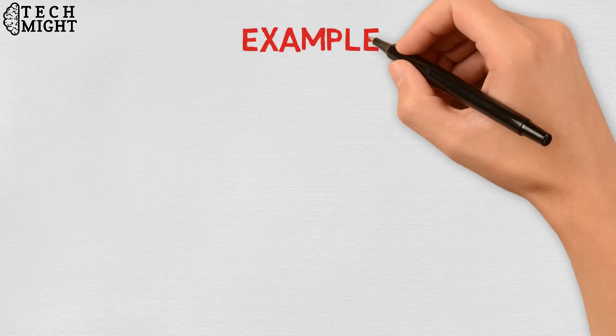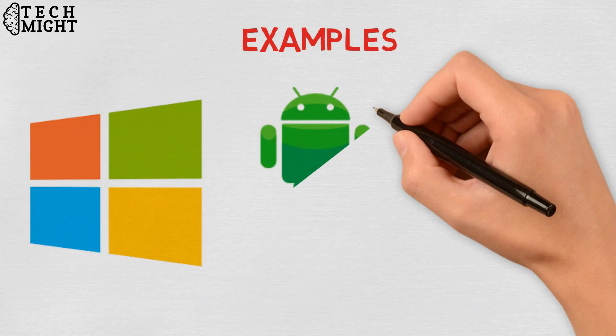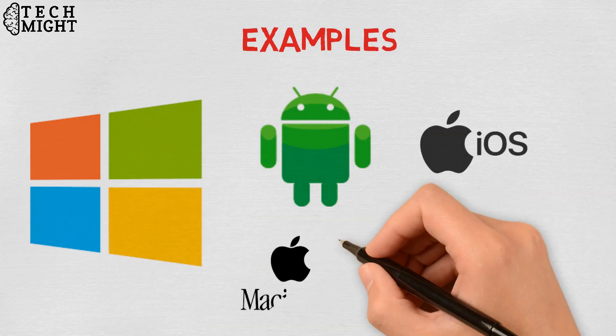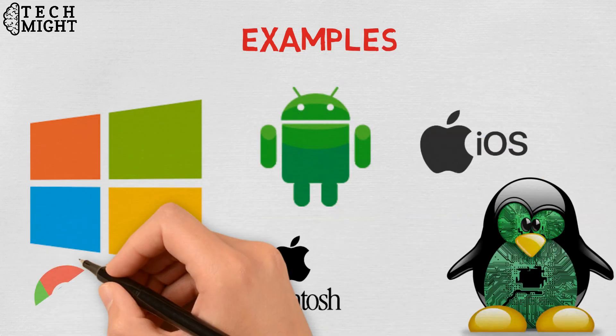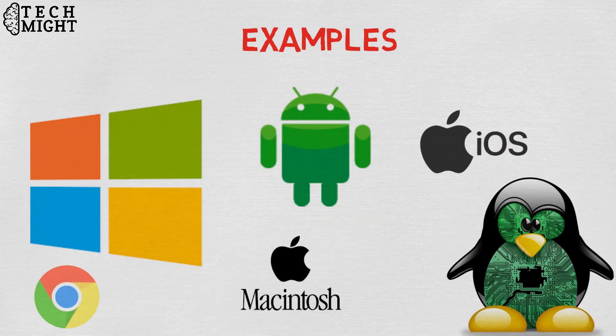Examples of operating systems are: Windows, Android, iOS, Mac, Linux, Chrome operating system, and Windows Phone operating system.